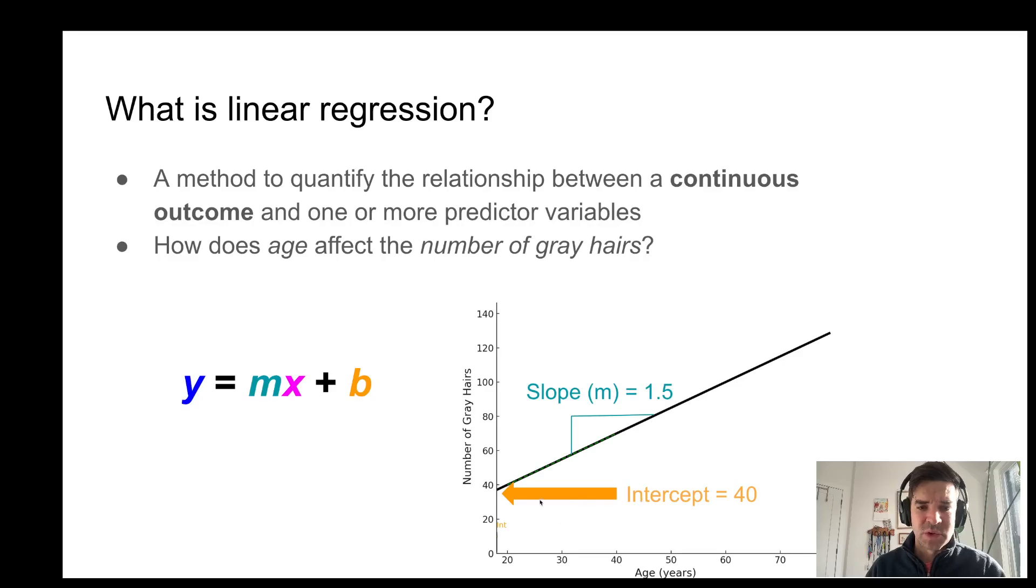as well as the intercept, which essentially is the number of gray hairs when the age is the lowest possible value. And in this made-up data set, the lowest possible value is 20.